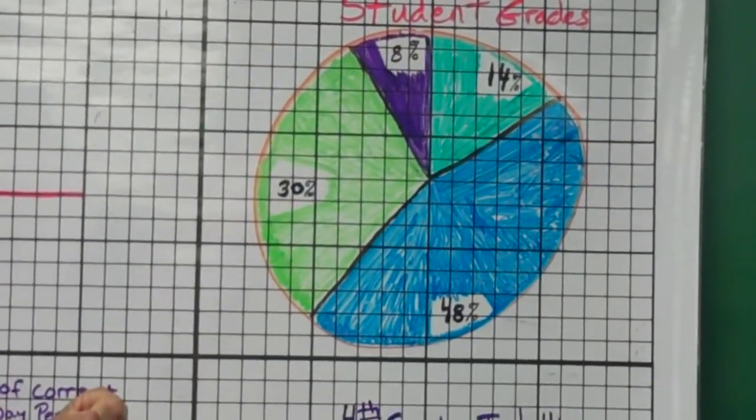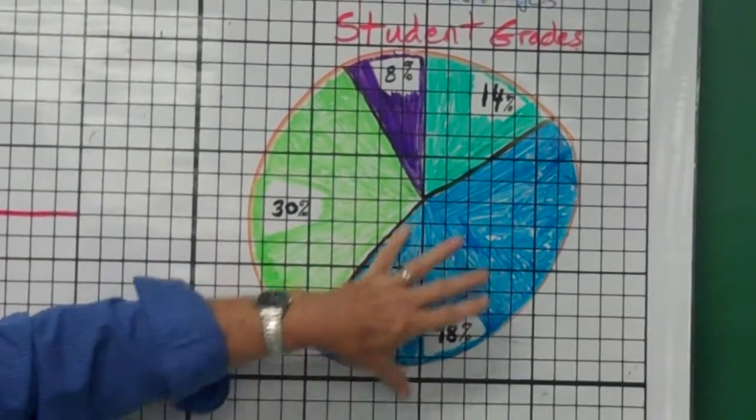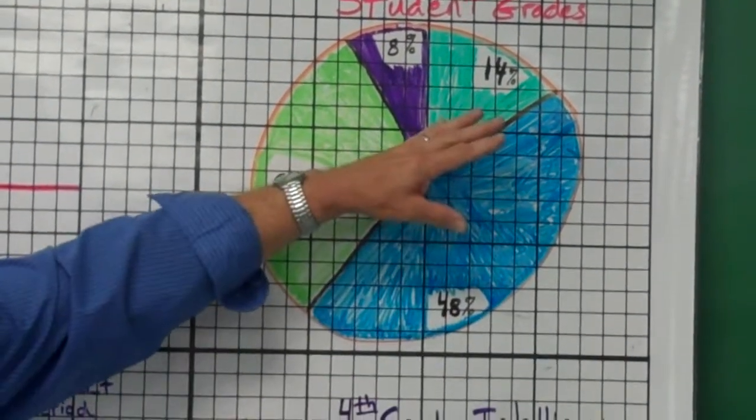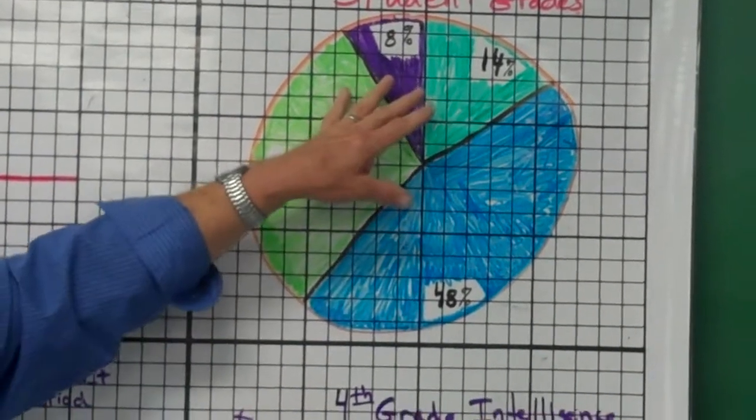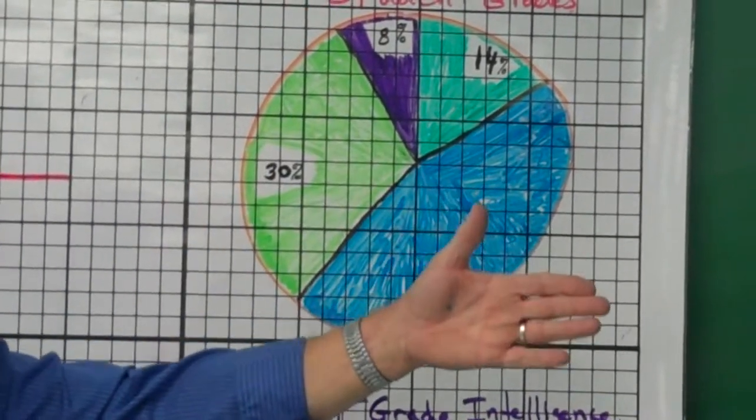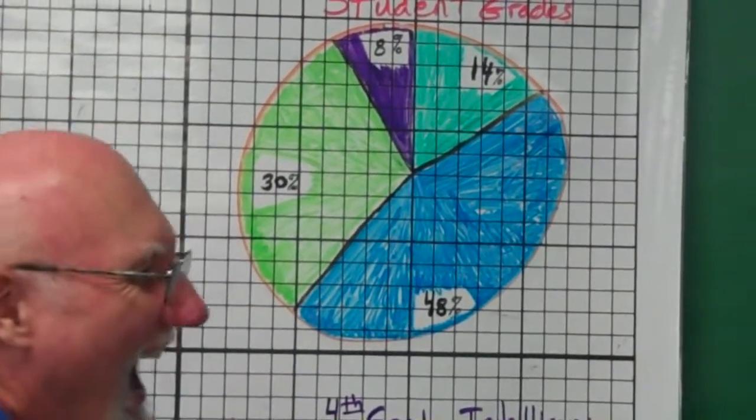It says student grades. And I can see that the pie is divided up into 48%, 14%, 30%, 8%. But I forgot to write down what the grades were.